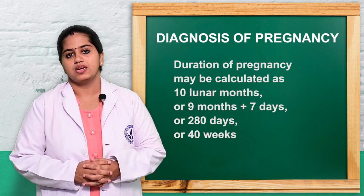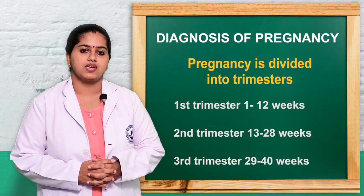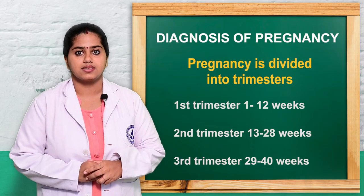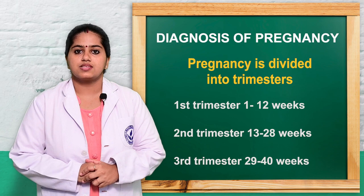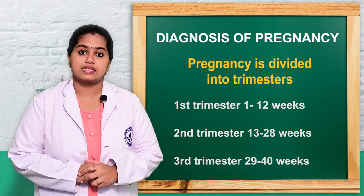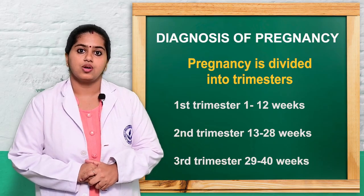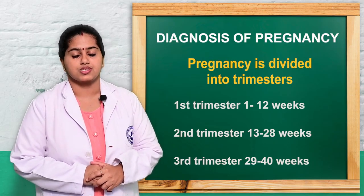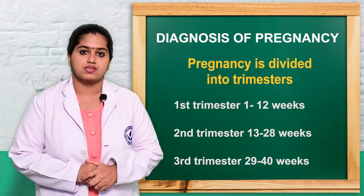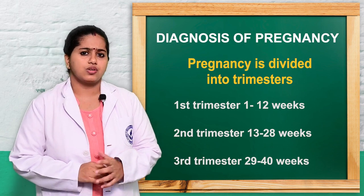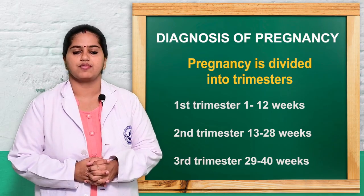Pregnancy can be divided into trimesters, each trimester being calculated as 3 months. There are 3 trimesters: the first trimester is 1 to 12 weeks of gestation, the second trimester is 13 to 28 weeks of gestation, and the third trimester is 29 to 40 weeks of gestation. During this pregnancy period, a lot of physiological changes take place in the pregnant woman.